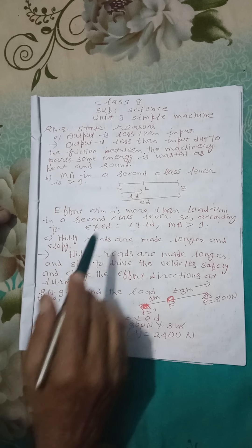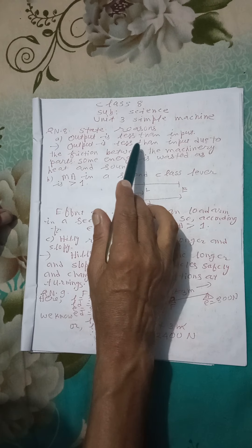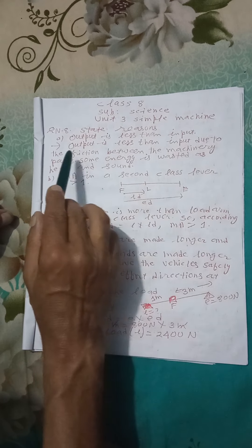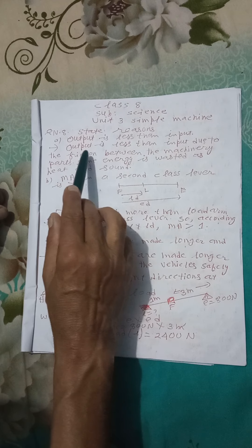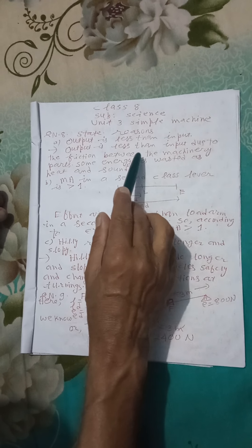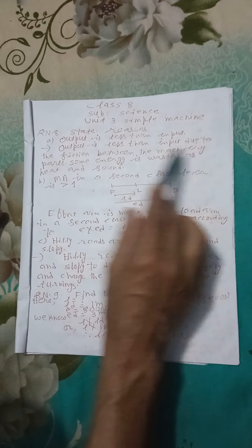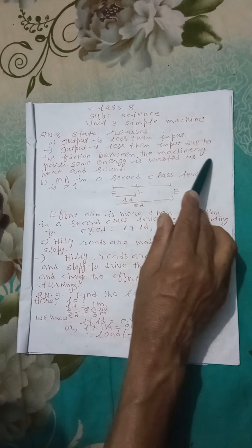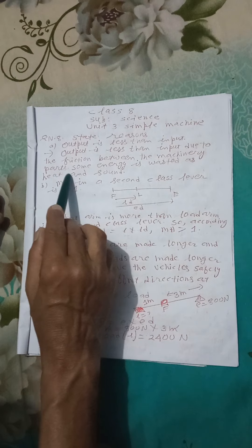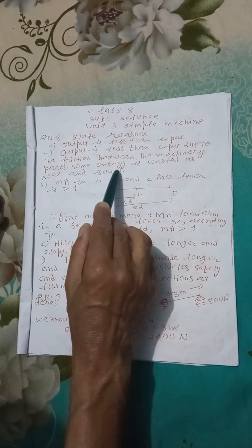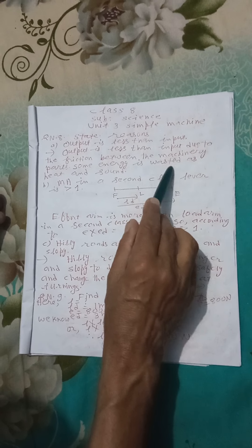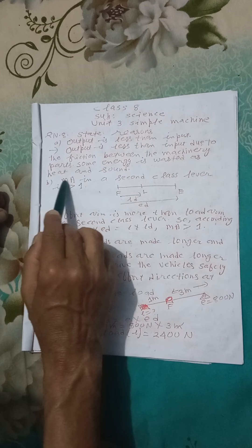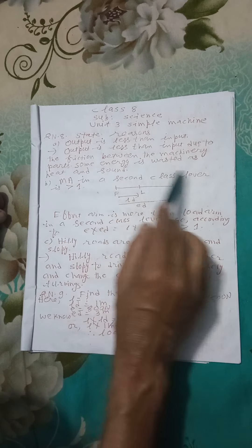Number A: Output is less than input. Answer: Output is less than input due to the friction between the machinery parts. Some energy is wasted as heat and sound due to the friction.